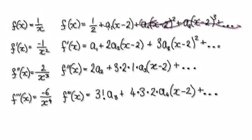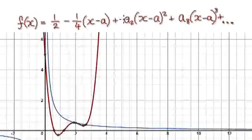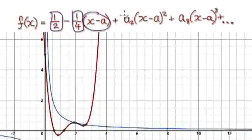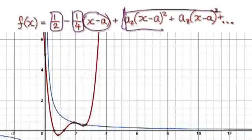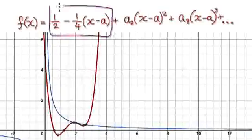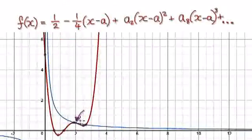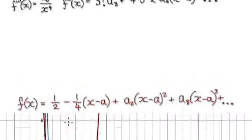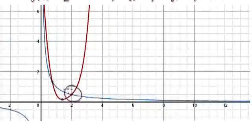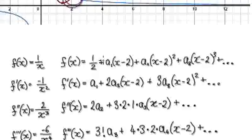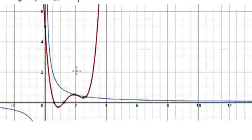So a1 equals negative 1/4. We now have the first two terms. You can see that at x equals 2, there is a negative gradient of minus 1/4, so it's going downhill. Having figured out the first two coefficients, we now have a better approximation around this region. Now we repeat the process.